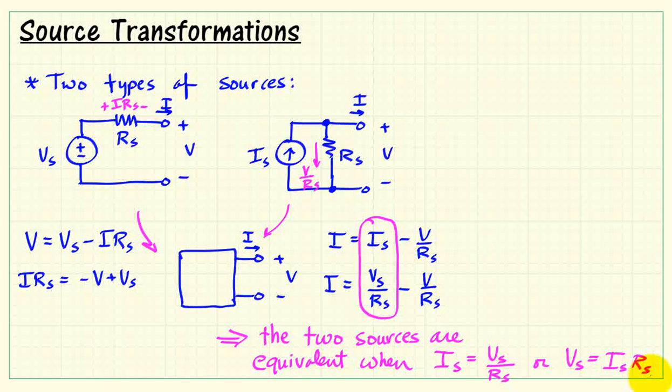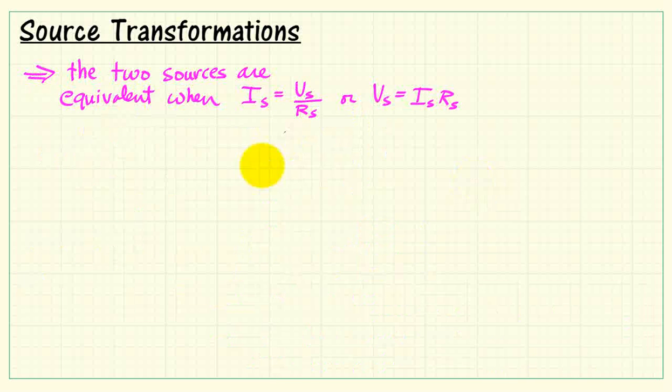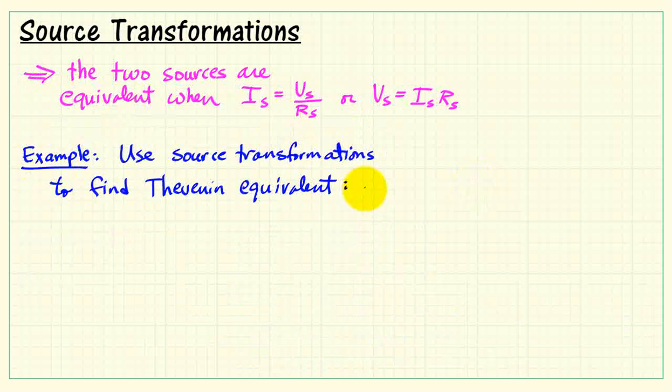We could also write that as V S equals I S times R S. It's kind of handy because it actually has the same form as Ohm's law, so it's very easy to remember.